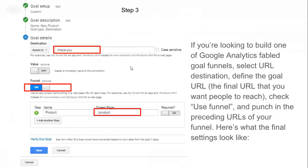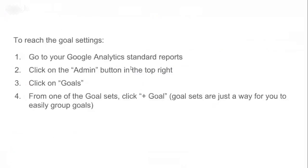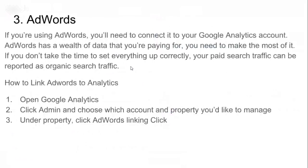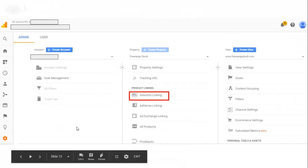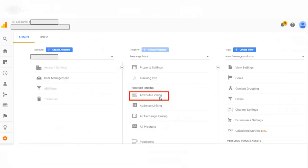Next, you look at AdWords linking. AdWords is a wealth of data, and if it's reflected in Google Analytics you have one integrated panel to look at all the data. To do it, go to Admin, then Property, click AdWords Linking, and you'll be prompted for access to AdWords — then you can connect it.